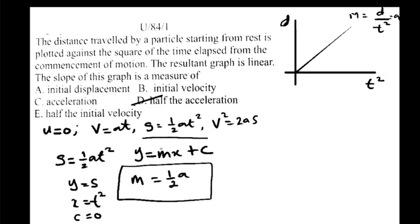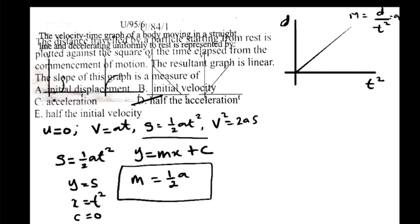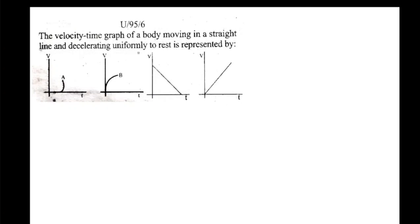Let's move to the next question. Question number 2 is from 1995, question number 6. The question states: the velocity-time graph of a body moving in a straight line and decelerating uniformly to rest is represented by... This is another thing students always find difficult — whenever an objective question involves a graph, students see it as difficult. But sincerely, it's absolutely simple.